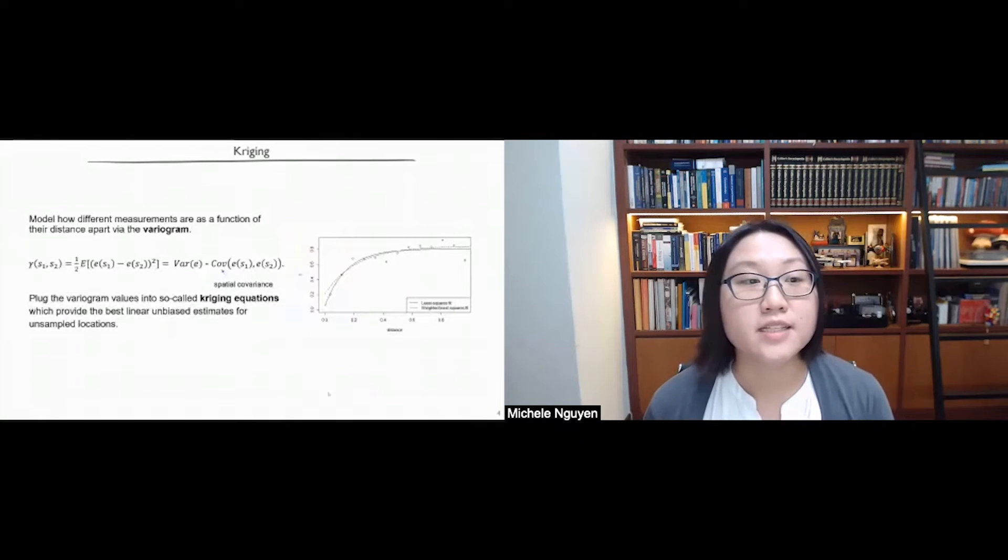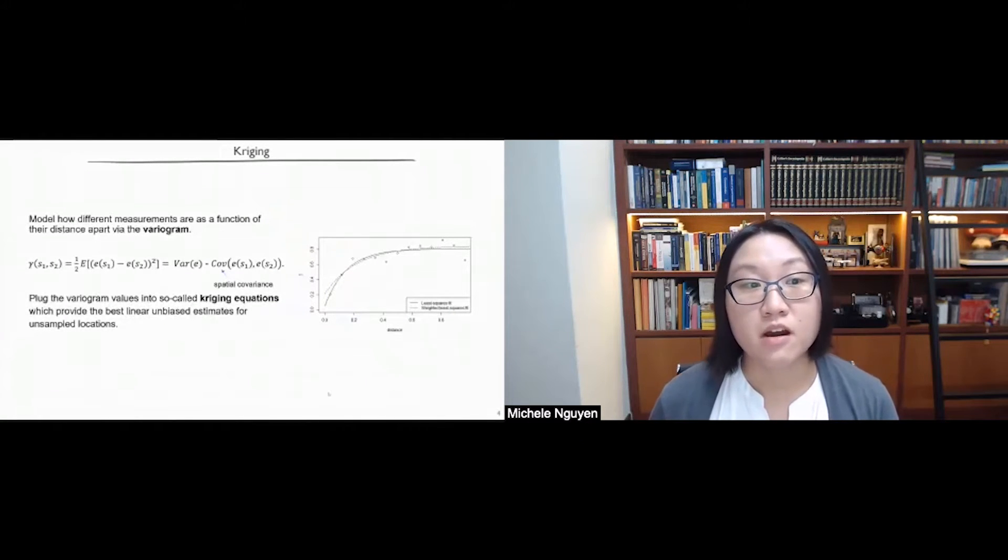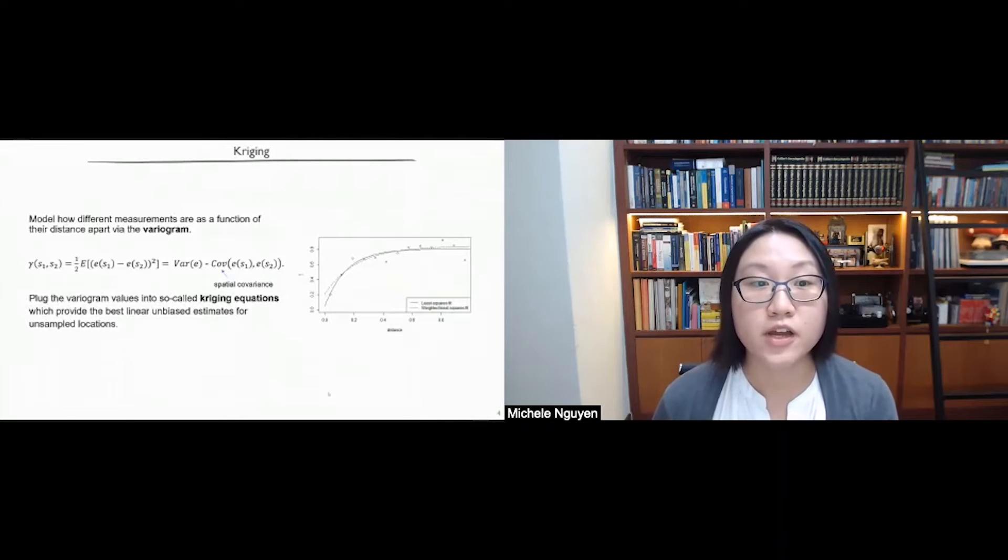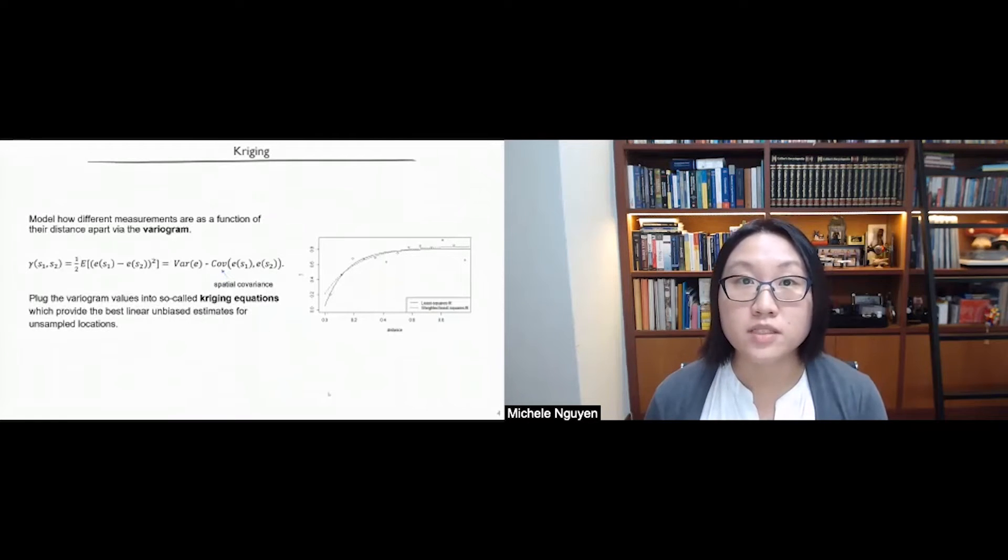Kriging starts by characterizing how different measurements are as a function of their distance apart. And this is expressed in mathematical terms through the construct called a variogram. This is defined as half the expected squared difference between measurements at two different locations, Y of S1 and Y of S2. And this quantity is also directly related to perhaps more familiar measures of variation, the variance and the covariance. Specifically, we talk about the spatial covariance because we are interested in how measurements at two locations co-vary with each other.